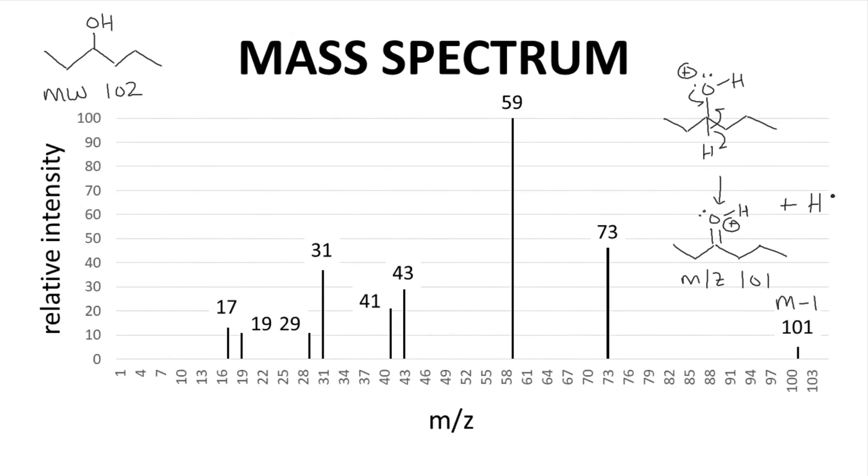With a very similar mechanism, we could break off an ethyl group. That would give an M minus 29 peak, which we do see at m/z 73.